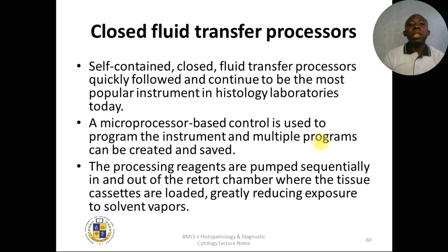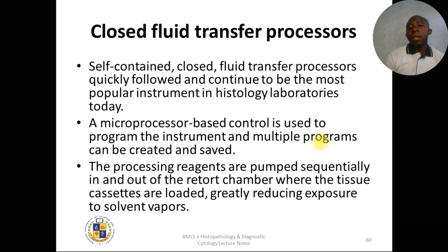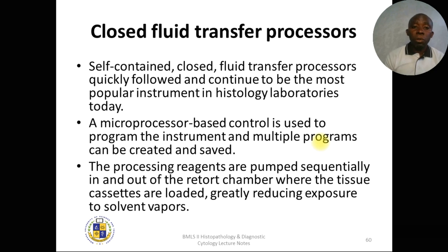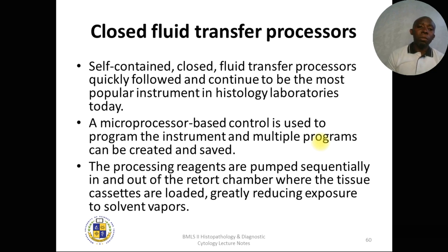The closed fluid transfer processor keeps the tissue in one position while fluids are pumped in and out sequentially. The processing steps do not change — fixation first, then dehydration, then clearing, then impregnation — regardless of the method used, whether manual, open system, or closed system. What changes is how the machine carries out the process.